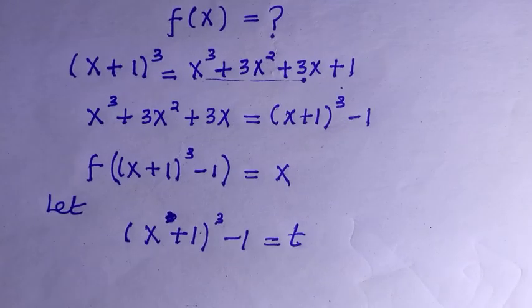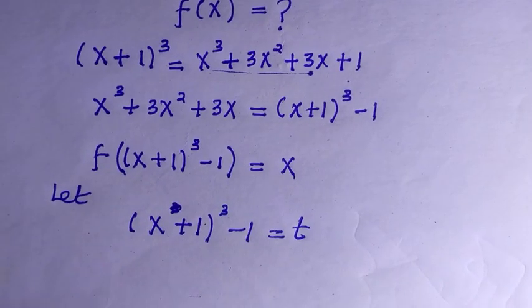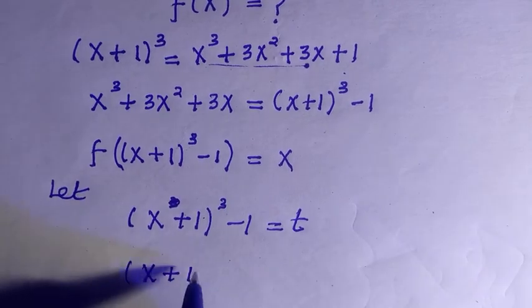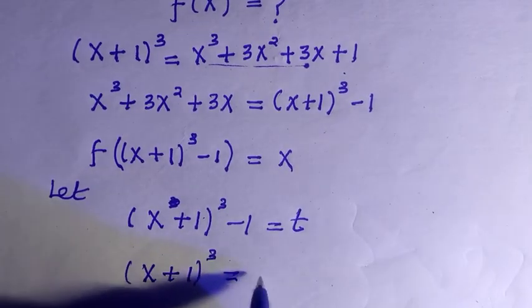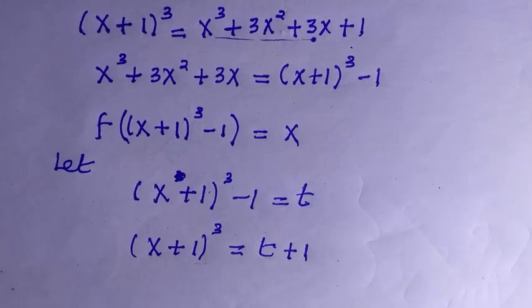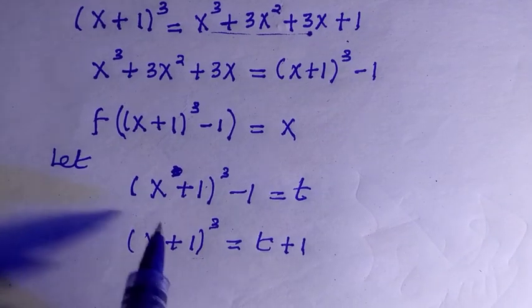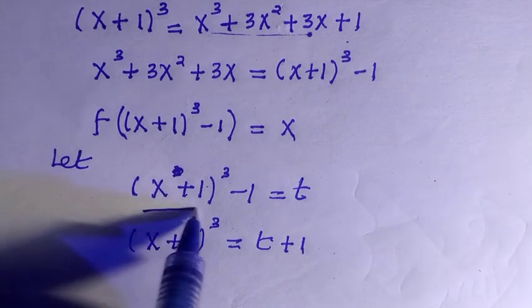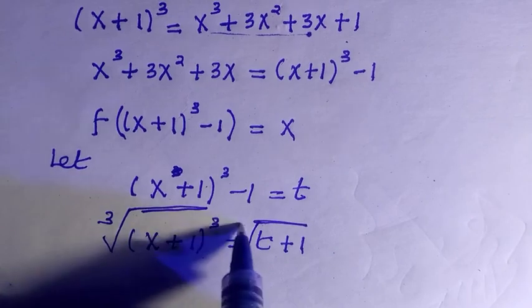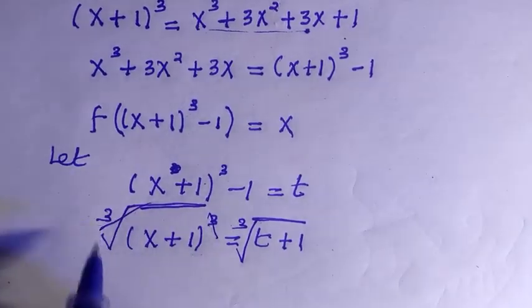Then we have (x+1)³ = t + 1. By taking the cube root of both sides, we have